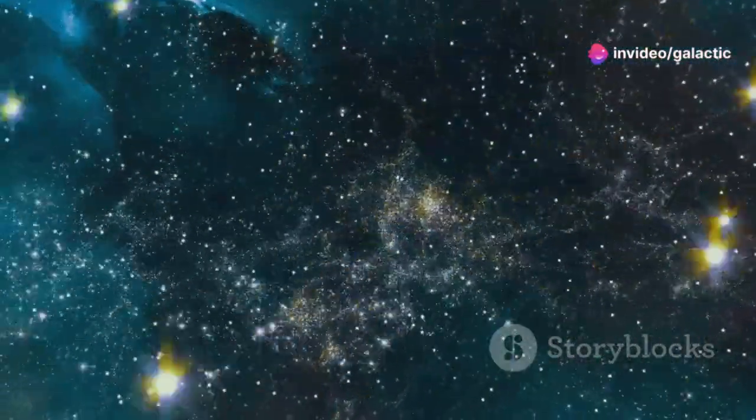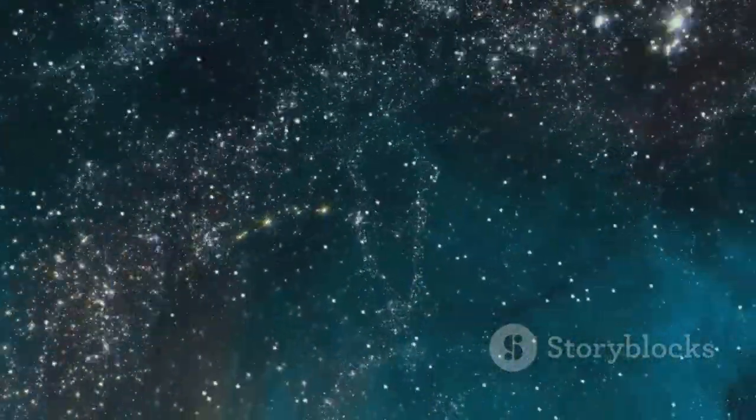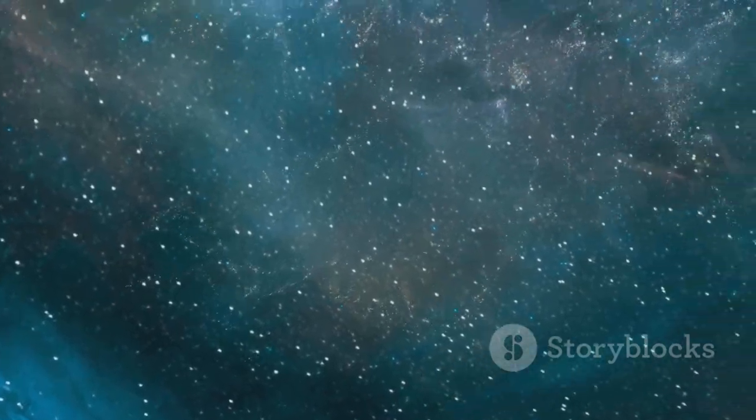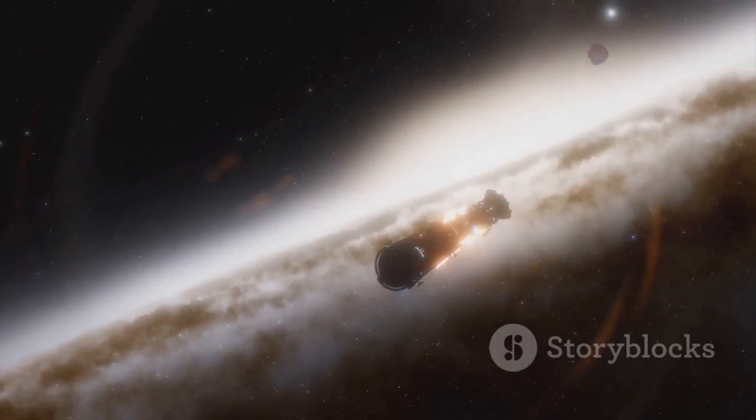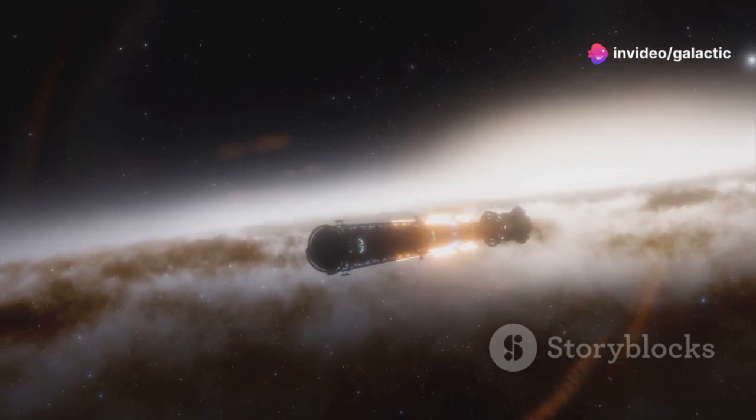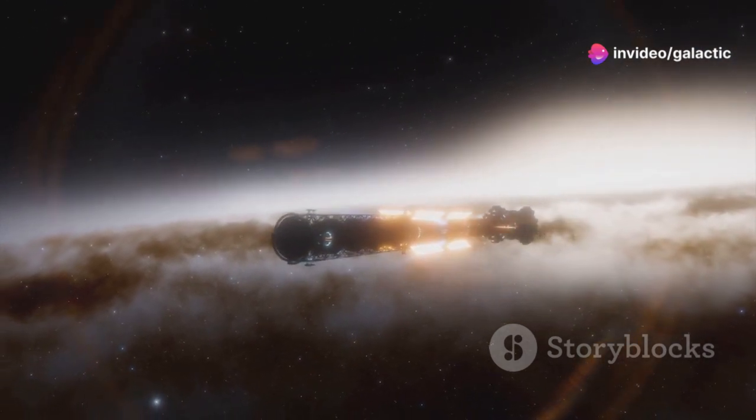The journey of JWST to its final destination, a point in space known as the 2nd Lagrange point or L2, was a remarkable feat of engineering. Positioned nearly a million miles from Earth, this location provides a stable environment for the telescope to operate.